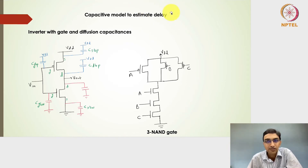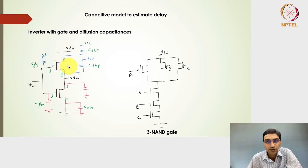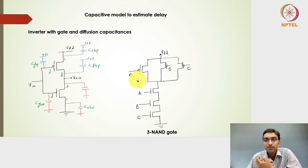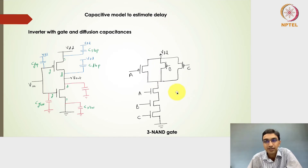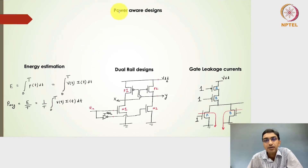To estimate delay with a rough handy calculation, one has to understand diffusion capacitance, which we will see in the second module. If we extract the capacitances for a given transistor-level digital circuit and understand the switching resistance, we can approximate any digital gate — such as a three-input NAND gate — into an RC circuit. Once we have the RC circuit, estimating the delay or performance of a given circuit becomes easier.